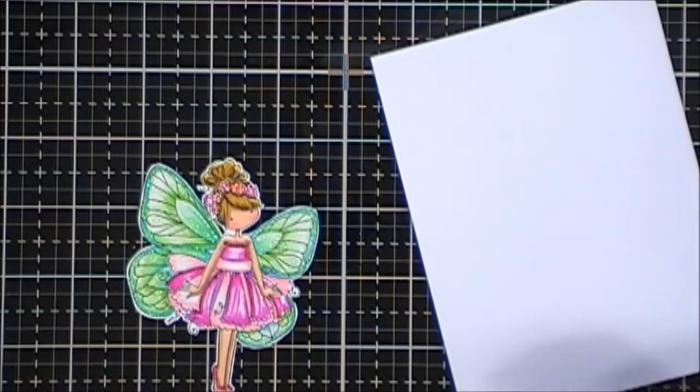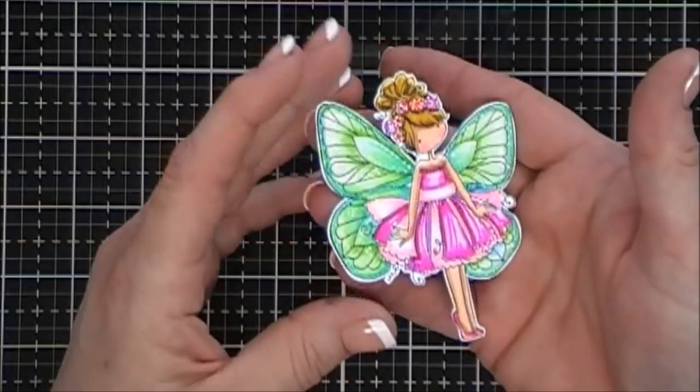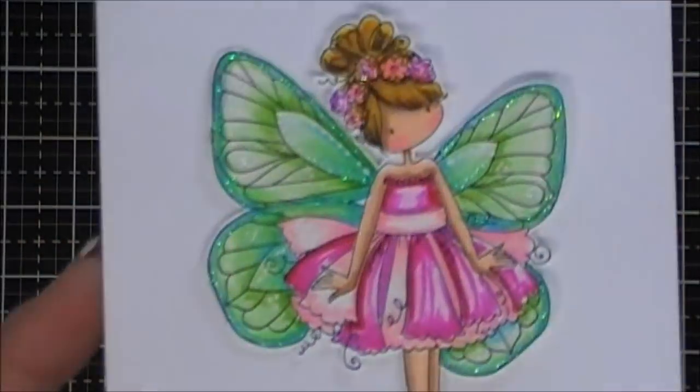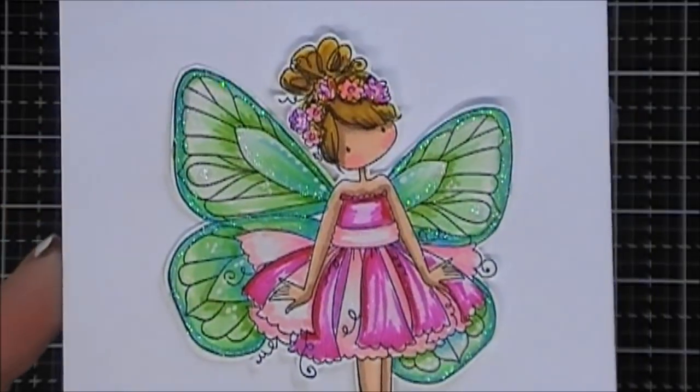To give her more sparkle, I chose some Nuvo Glitter Drops in White Blizzard. I went around her wings, so she is full of sparkle and I really like the way that looks. Very fun.